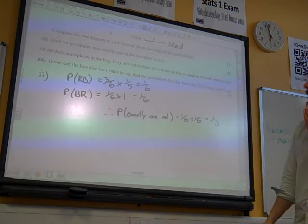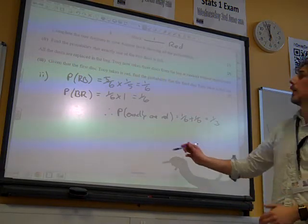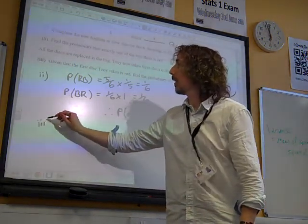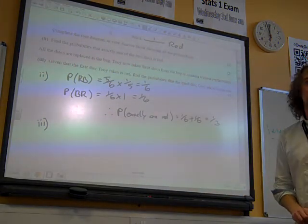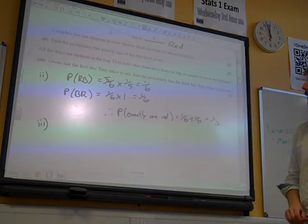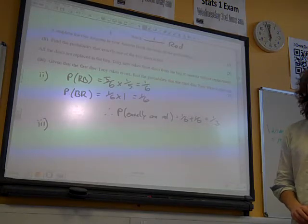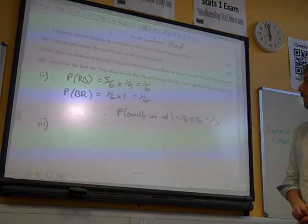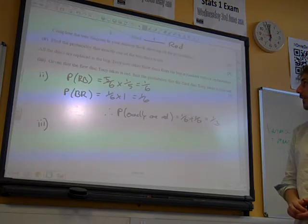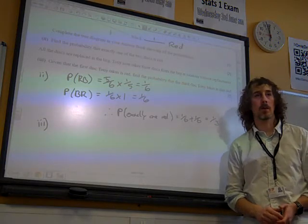And all the discs... Oh right, we're starting again now. Tony, Martina's friend, has come along, and all the discs are put back in the bag. He now takes three discs at random without replacement. Given that the first disc Tony takes is red, find the probability that the third disc Tony takes is also red.